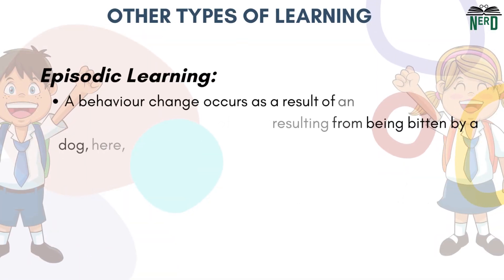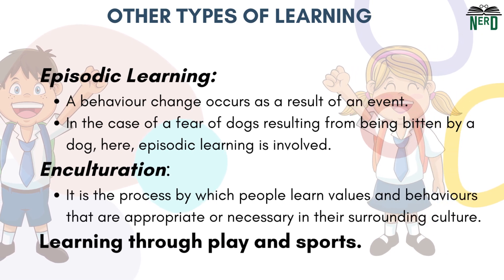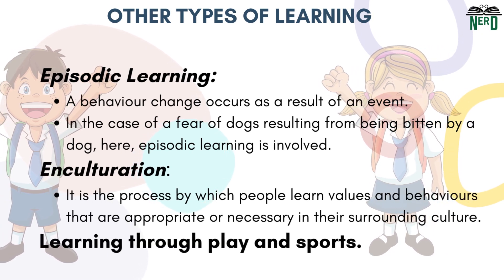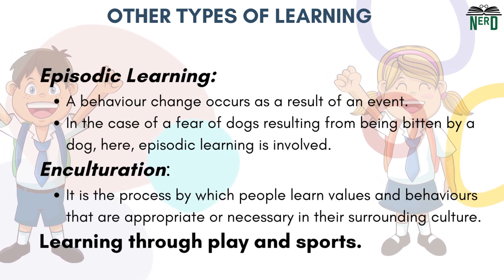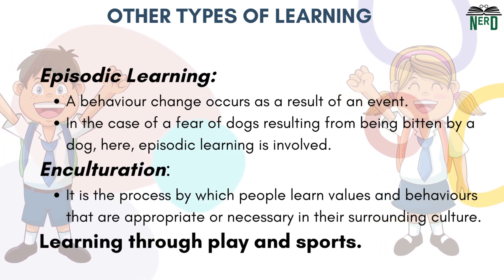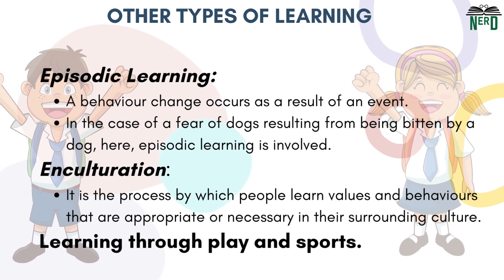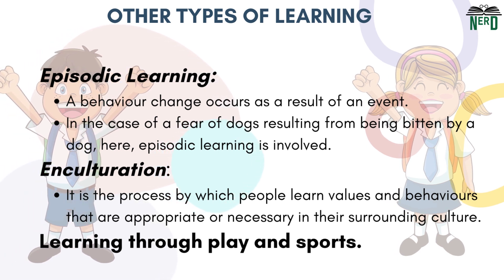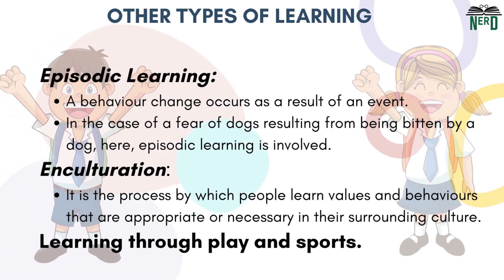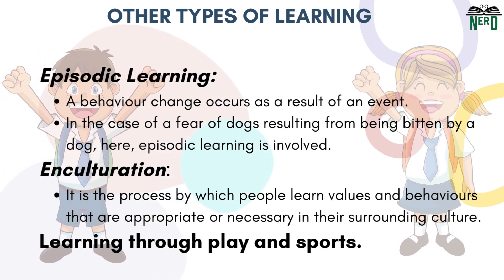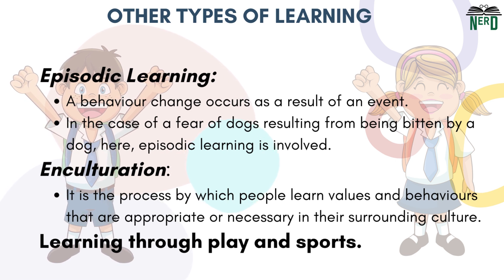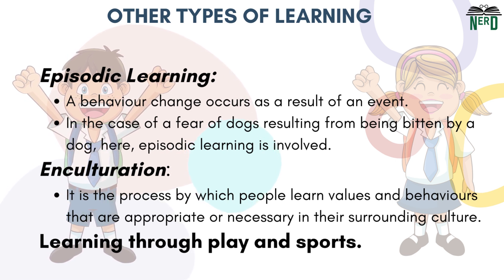Another important type of learning is episodic learning. In this type of learning, a behavior change occurs due to an event. For example, episodic learning involves fear of dogs resulting from being bitten by a dog.